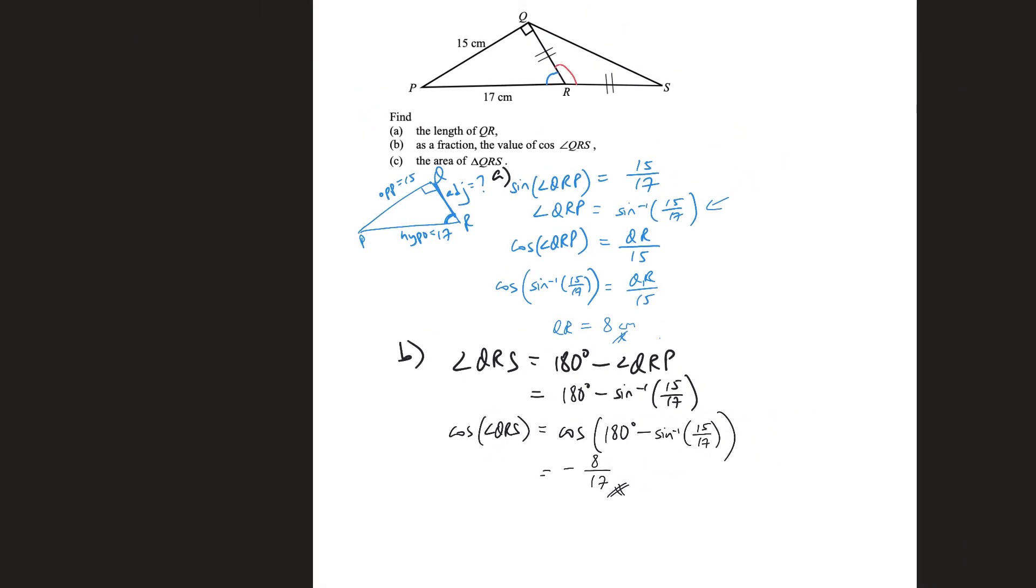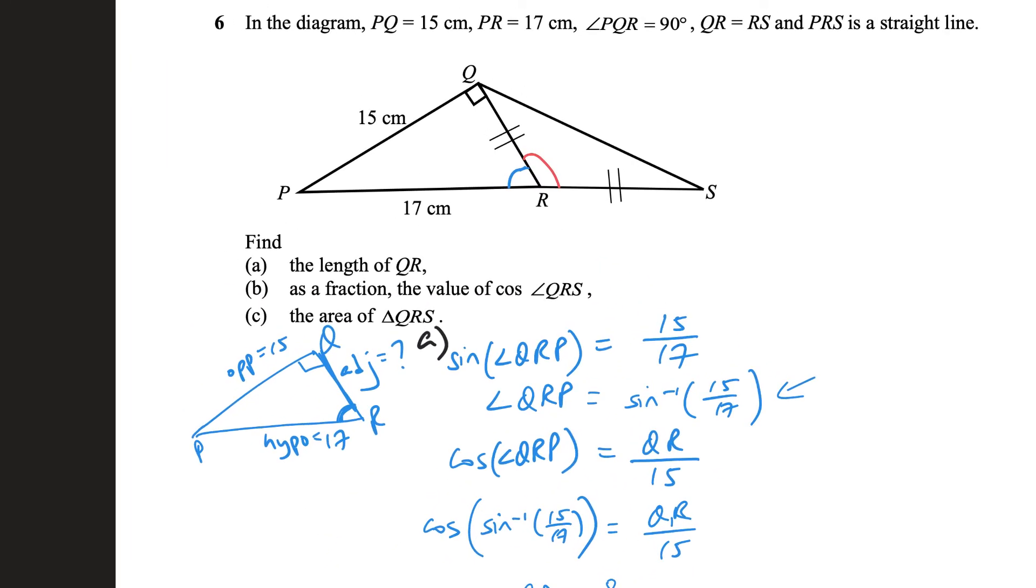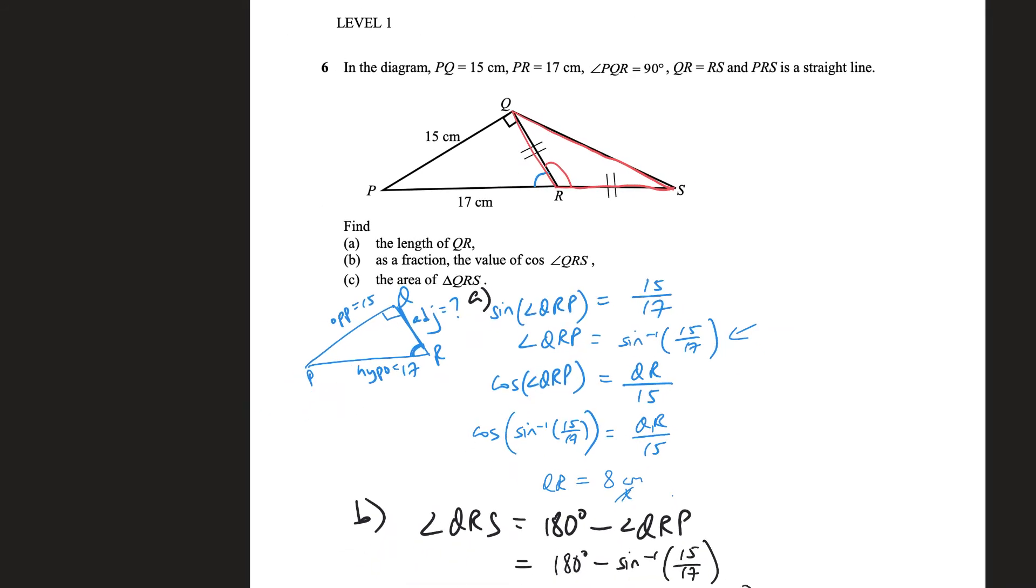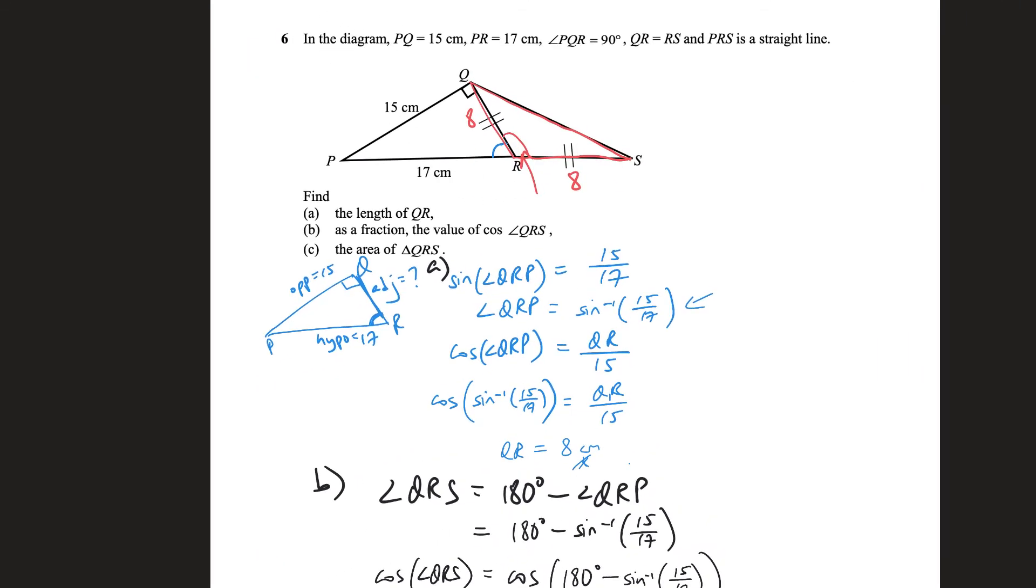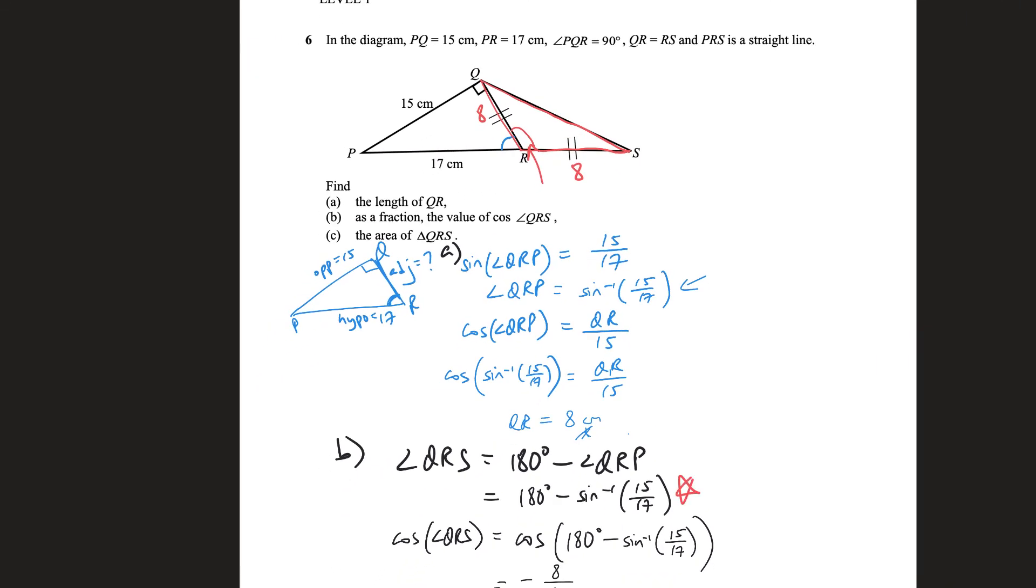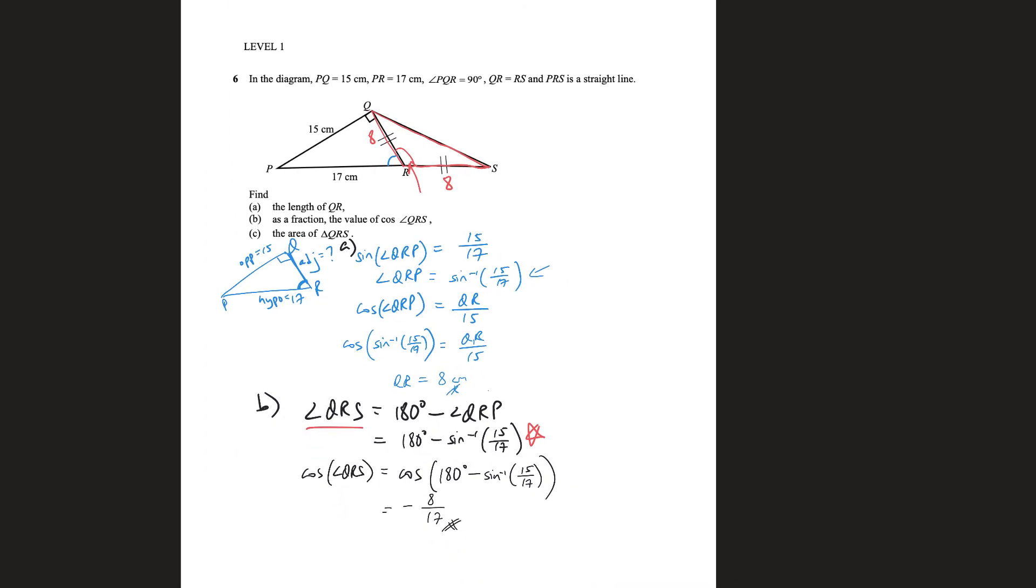And now part C, the area of triangle QRS, which is really this one, QRS, area of this triangle. Let me just write it out, just kind of outline it. And we already found QR, right? QR is simply 8 cm, these two are equal. And the angle in between, we've also found QRS is actually here. QRS is actually this.